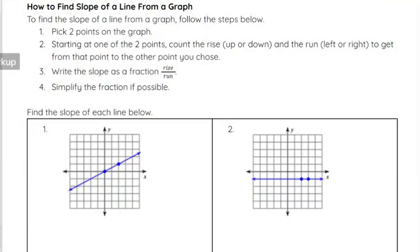Now let's talk about how we find slope from a graph. We're going to pick two points on the graph — in these examples I have two points already picked for you. You can pick any two points you like, but I would suggest points that are on the corners of the grid lines of the coordinate plane. You'll find that if you can get them closer together, it usually helps with what you have to simplify in the end.